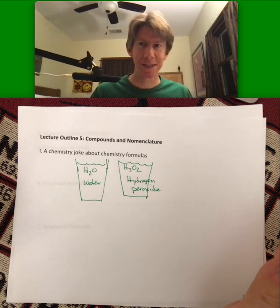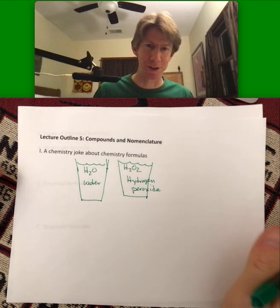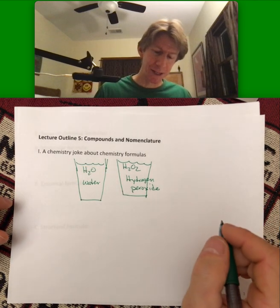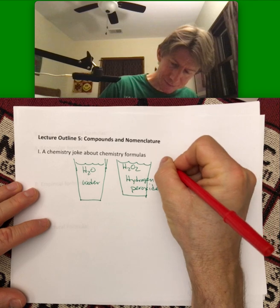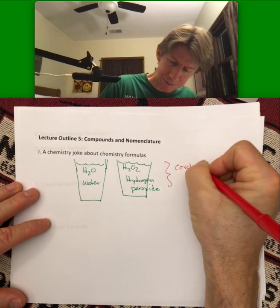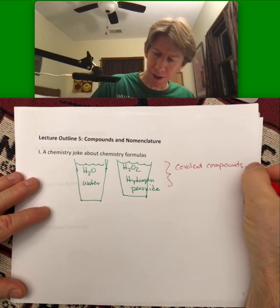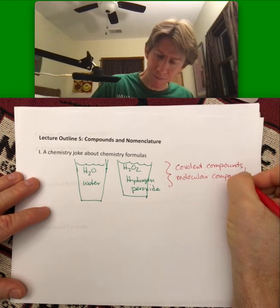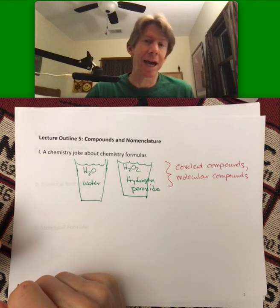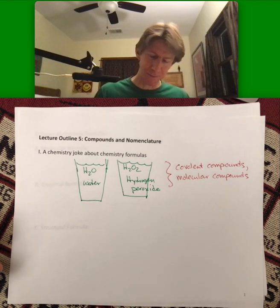There's a huge difference, and every single formula is telling you a lot of information that we are going to start uncovering in this course. H2O and H2O2 are two compounds that we like to call covalent compounds, and they're also called molecular compounds because they are the actual molecules of chemistry.